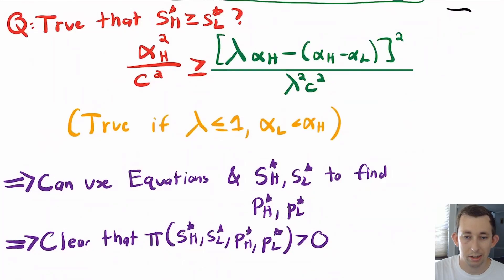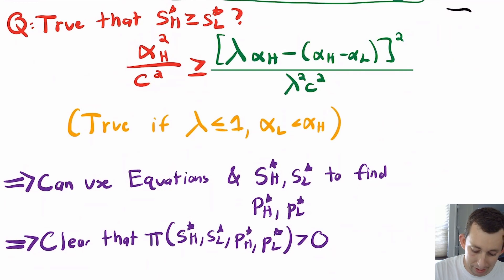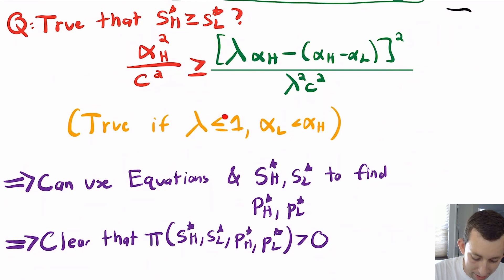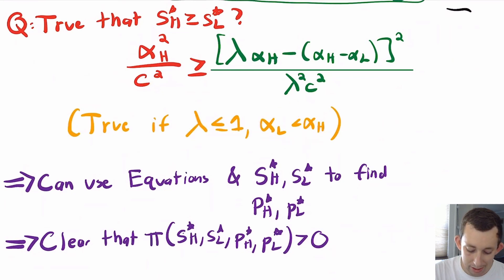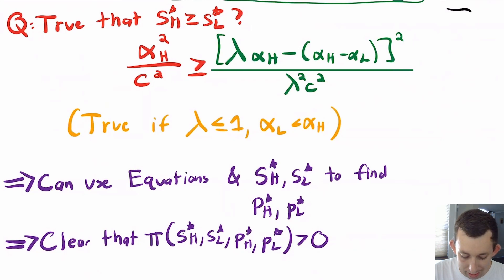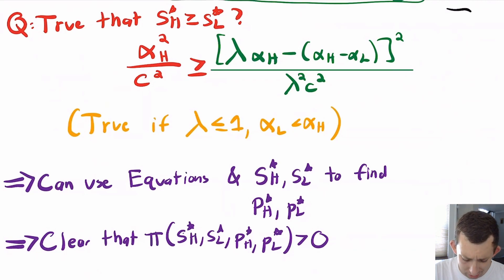Now that we have S_H* and S_L*, we need to verify that S_H* > S_L*. After some simplification, this is true as long as λ ≤ 1 (which it definitely is) and α_L < α_H (which it definitely is). So we confirm a separating equilibrium where the firm offers a unique package to high types different from the one offered to low types. We can use these equations to find P_H* and P_L*, and verify that expected profit is greater than zero.